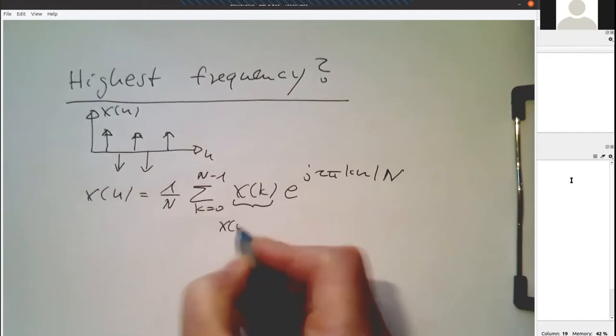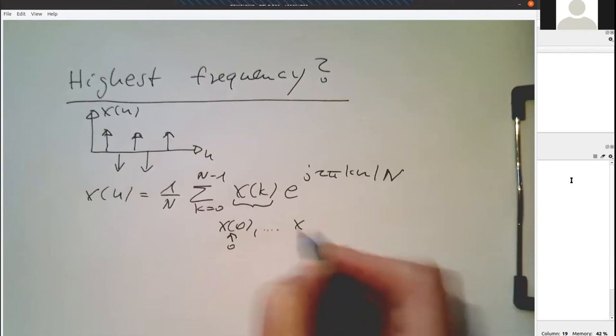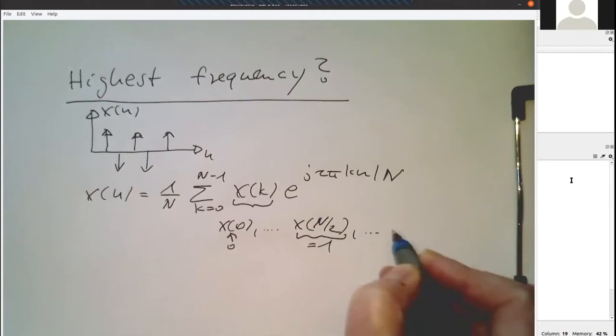Now when we're looking at these x(k)'s here, our x(0) is zero, and this stays zero up to x(n/2). So we set this to one, and then the rest here, up to x(n-1), all that stays zero.